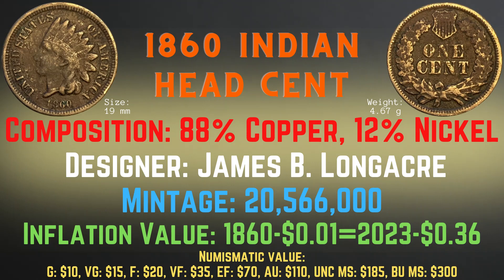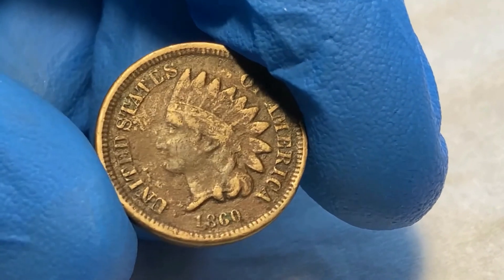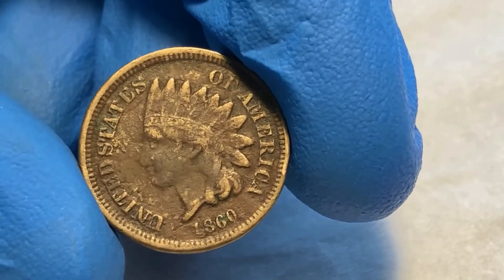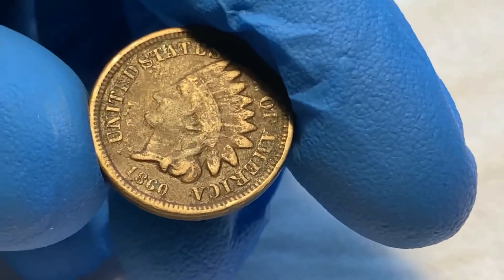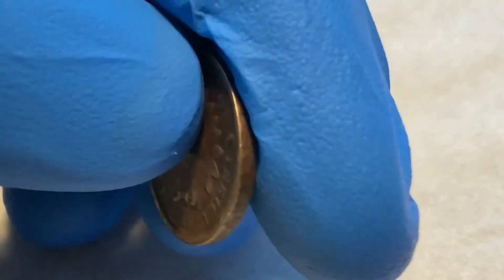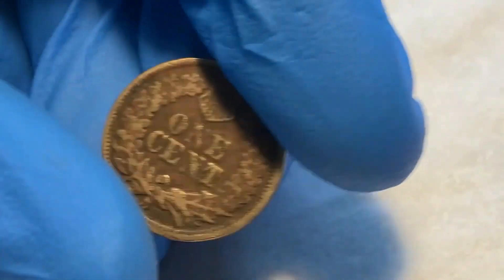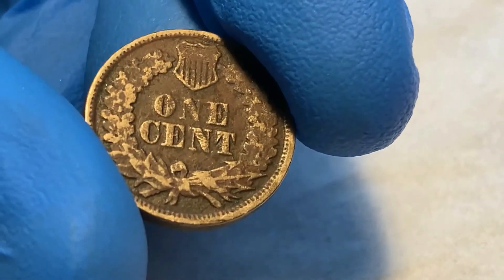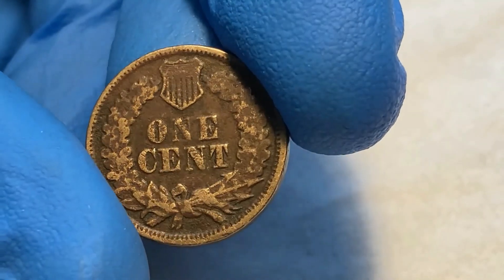The 1860 Indian Head cent has a mintage of 20,566,000 and an inflation value of 36 cents for the year 1860. Numismatic values range from $10 in good condition up to $300 in brilliant uncirculated mint state condition. This coin is in a little bit better shape than the previous 1859 cent — the details are quite clear and it is not as worn down. Both the front and back look fine, the shield is pretty clear, and the "one cent" is clearly visible. I would grade this coin in very fine condition.